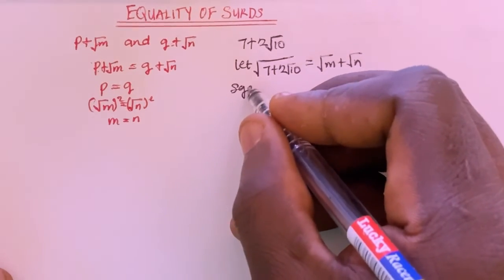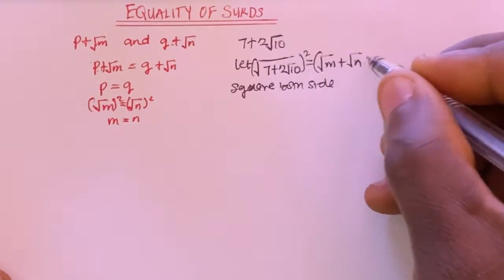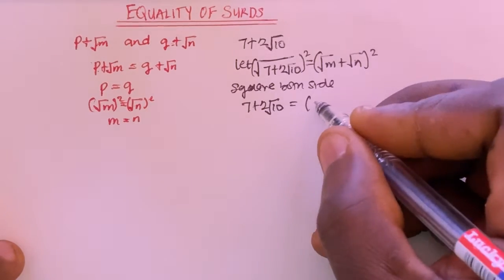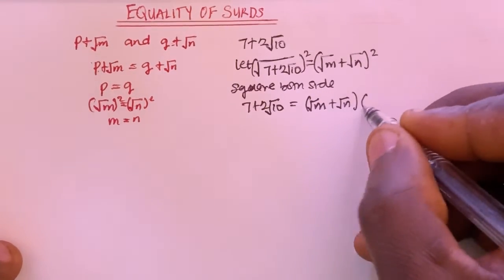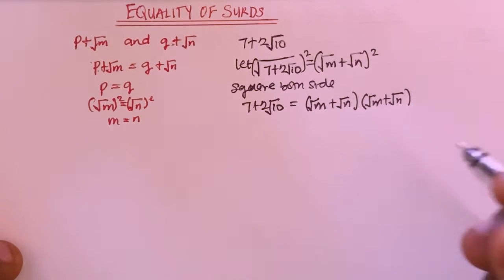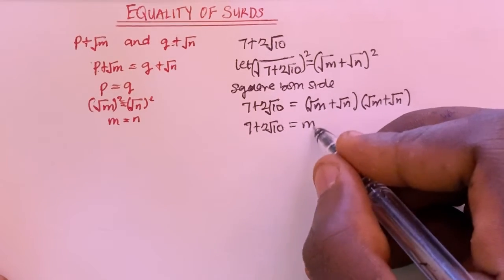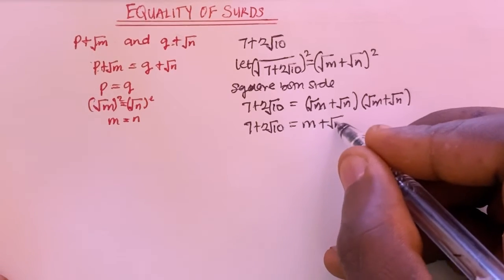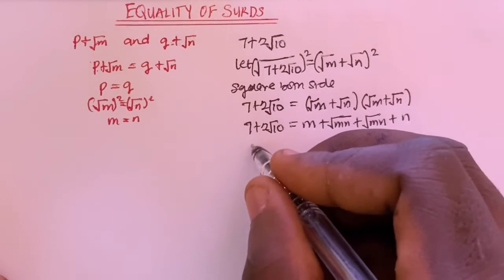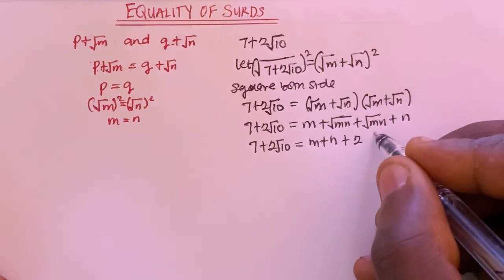If I square both sides, I'm going to have the left side squared and the right side squared. So I'm going to have 7 plus 2 root 10 equals root of M plus root of N, all in brackets, times root of M plus root of N. Now using the equality of surds method, this multiplier gives me M, plus root of MN, plus root of MN, plus N. So I'm going to have 7 plus 2 root 10 equals M plus N plus 2 root MN.